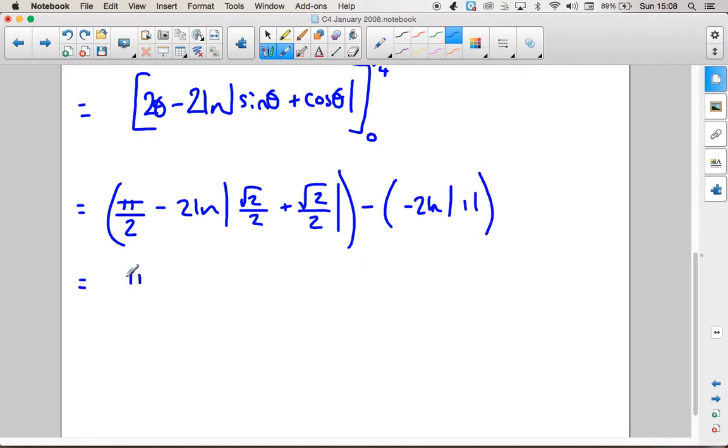So we've got pi over 2 minus 2 ln root 2 over 2 plus root 2 over 2 is root 2 minus 2 ln of 1. ln of 1 is 0.